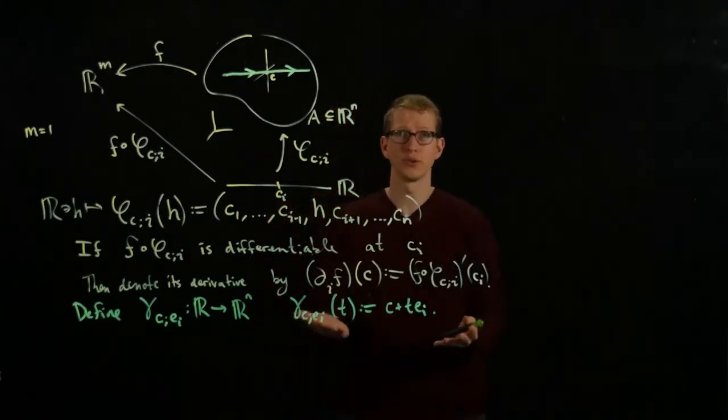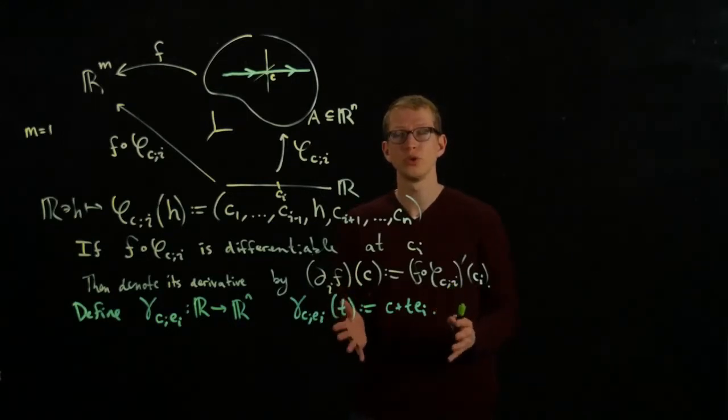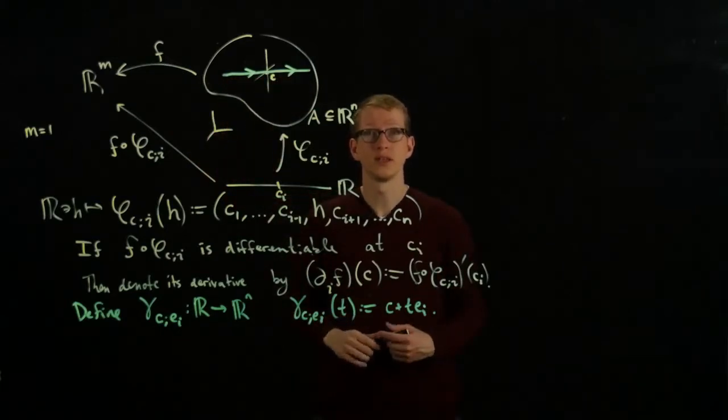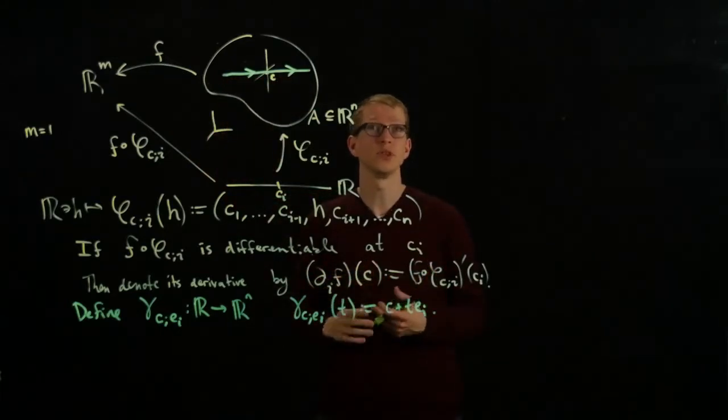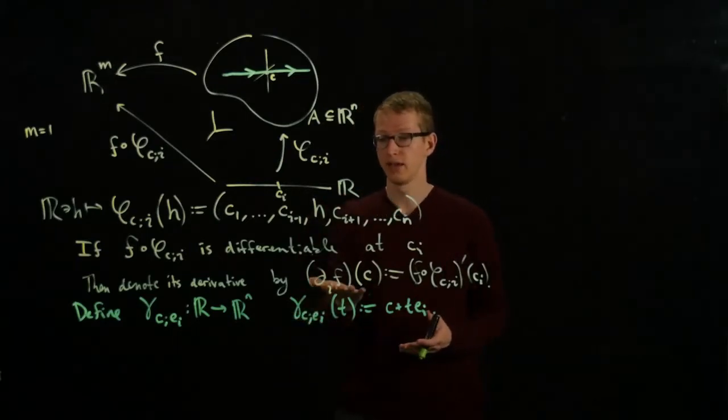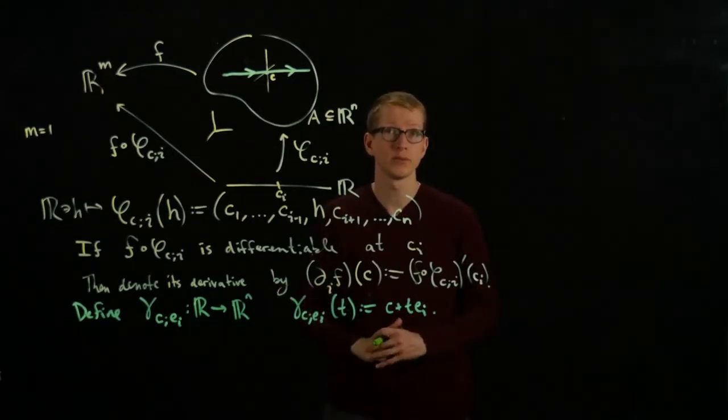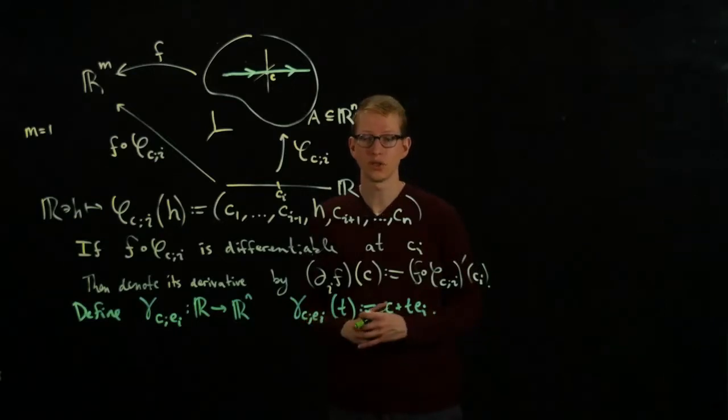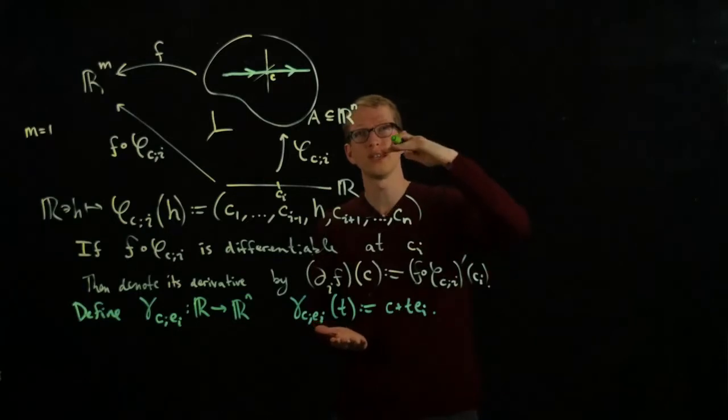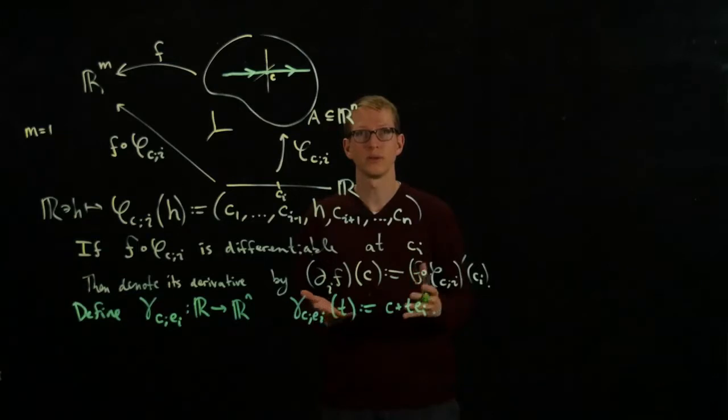We can define the partial derivatives using these curves as well. This perspective will be much more useful when we don't necessarily have a straight line curve going through C. You can imagine C could be the unit circle in R^2, and there we can't just take the partial derivative. But we can look at a curve inside the circle and differentiate that.